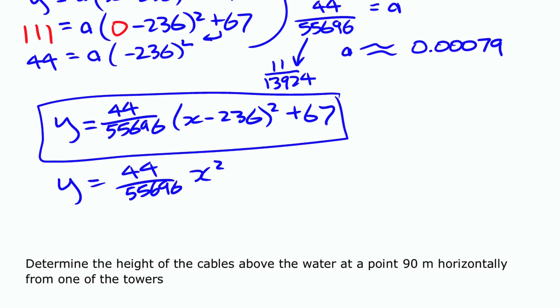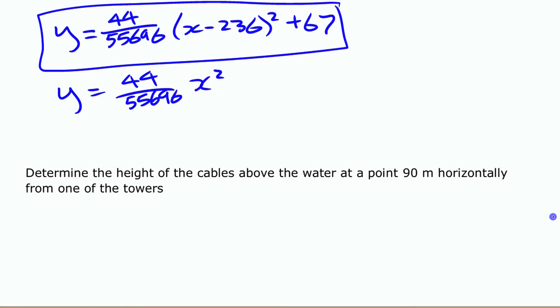Now the other part of what we're going to do with this is we're going to actually use it to calculate a value. If you want to know the height of the cables above the water 90 meters from one of the towers, I can just take my function now—and I'm going to use the one that I came up with first because it's actually easier to use for this—and substitute in my value.